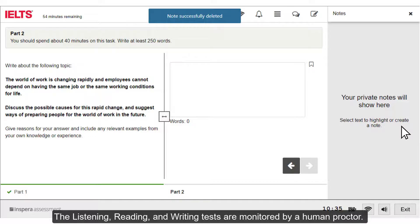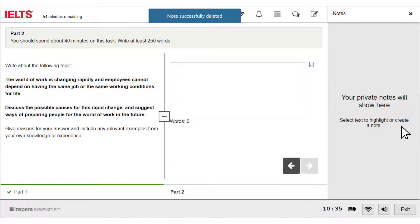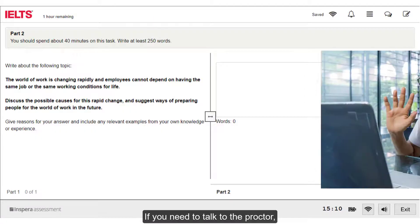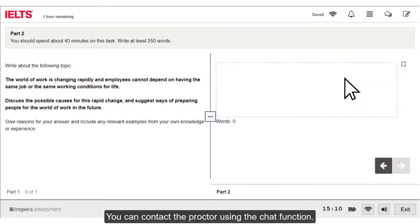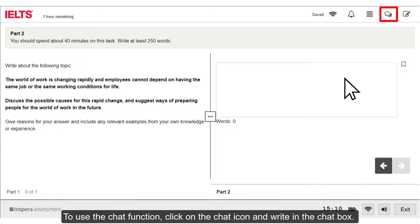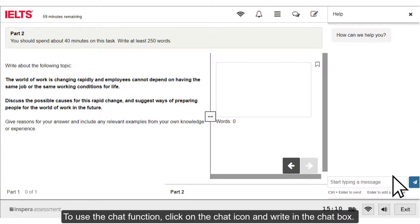The listening, reading and writing tests are monitored by a human proctor. If you need to talk to the proctor, you can raise your hand for the camera to see and the proctor will call you. You can contact the proctor using the chat function. To use the chat function, click on the chat icon and write in the chat box.